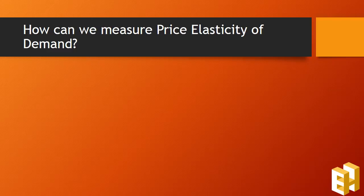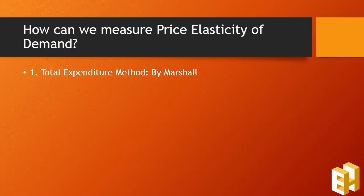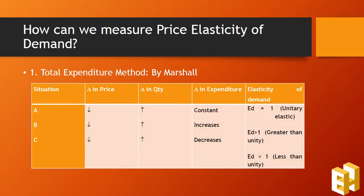How do we measure the price elasticity of demand? The first method is the total expenditure method, which was proposed by Marshall. It shows us the effect on the consumer's total expenditure due to change in price, maintaining the relationship between price and quantity to be the same. If with a decrease in price expenditure is constant, then elasticity equals 1. If expenditure increases, then elasticity is greater than 1. And if expenditure also decreases, then elasticity is less than 1.